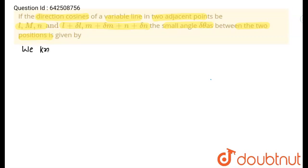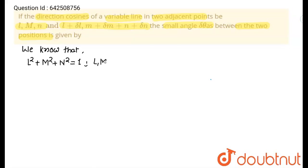We know that L squared plus M squared plus N squared — I am going to write capital L squared plus capital M squared plus capital N squared. This statement is for every vector, and this equals 1, where L, M and N are direction cosines of a vector.